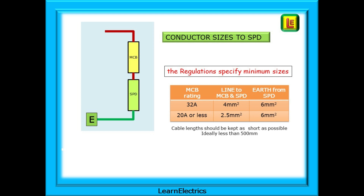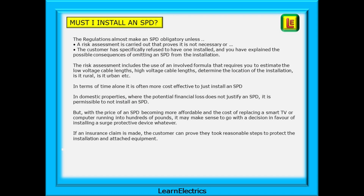The regulations almost make an SPD obligatory unless a risk assessment is carried out proving it is not necessary, or the customer has specifically refused one after having the possible consequences explained to them. The risk assessment involves a formula requiring you to estimate low voltage and high voltage cable lengths, and determine the location of the installation — whether rural, urban, etc. In terms of time alone, it is often more cost effective to simply install an SPD.